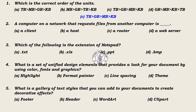2. A computer on a network that requests files from another computer is blank. Options: a client, a host, a router, a web browser. Answer: a client. 3. Which of the following is the extension of Notepad? Options: .txt, .xls, .ppt, .bmp. Answer: .txt.